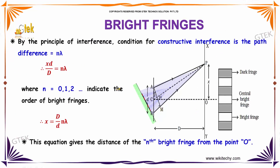Now we will talk about the bright fringes. By the principle of interference, the condition for constructive interference is the path difference equal to n lambda. So xd divided by D equals n lambda, where n equals 0, 1, 2, indicating the order of bright fringes. Thus x equals n lambda D divided by d. This equation gives the distance of the nth bright fringe from point O.